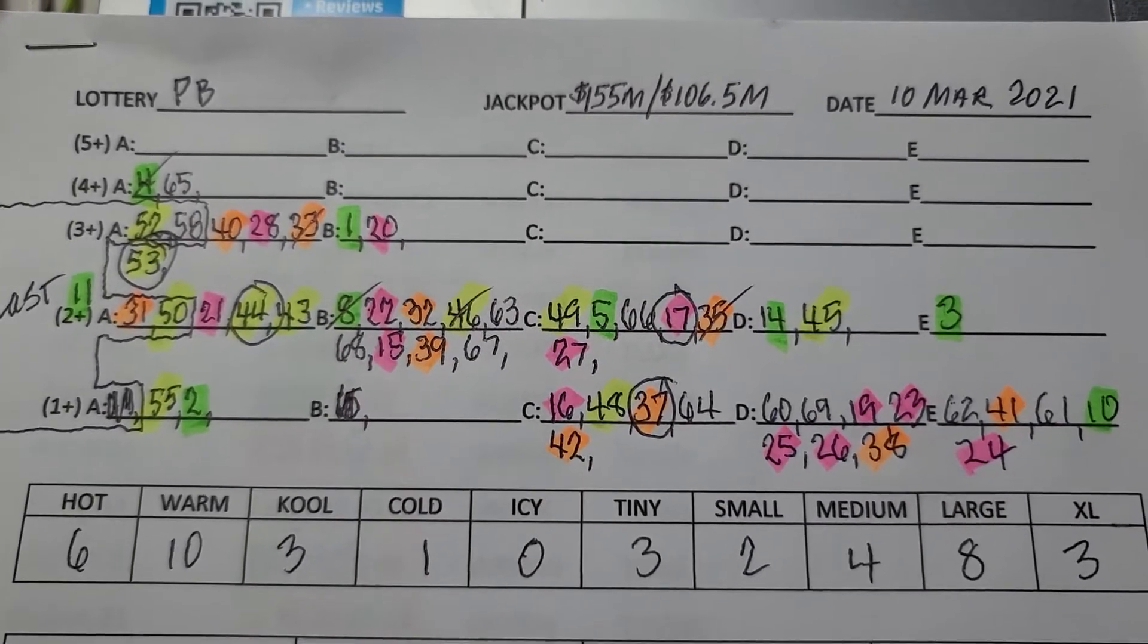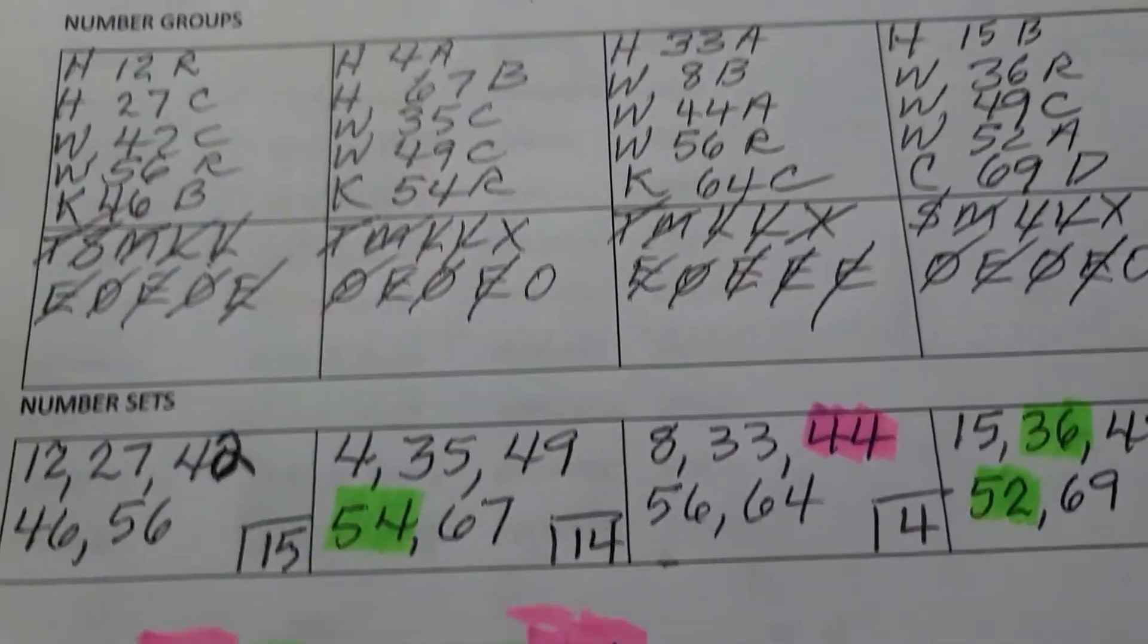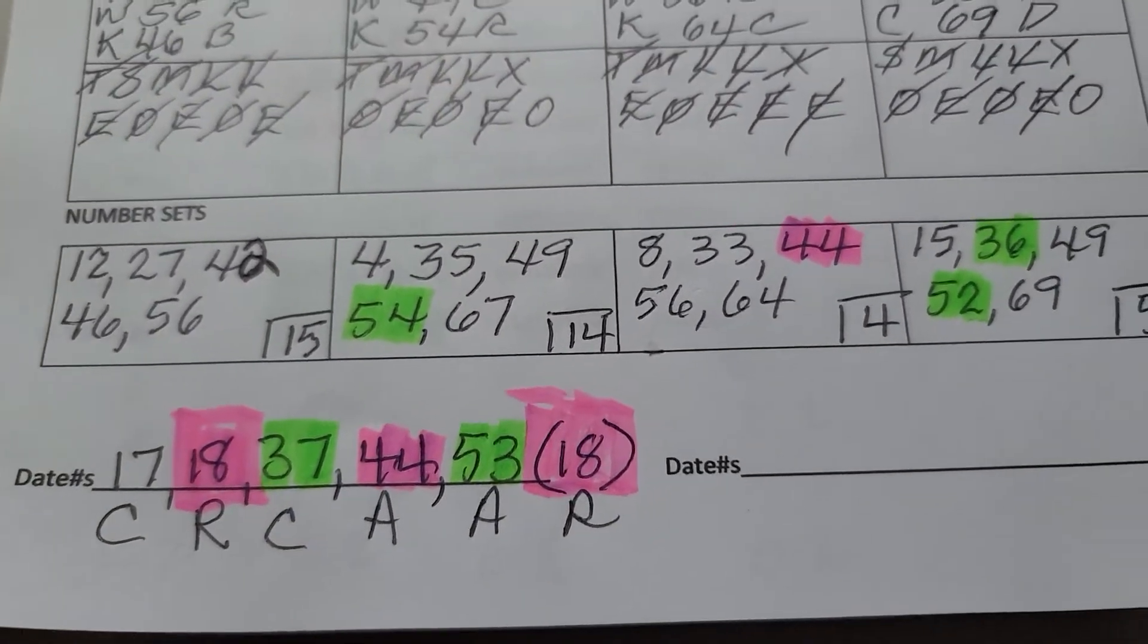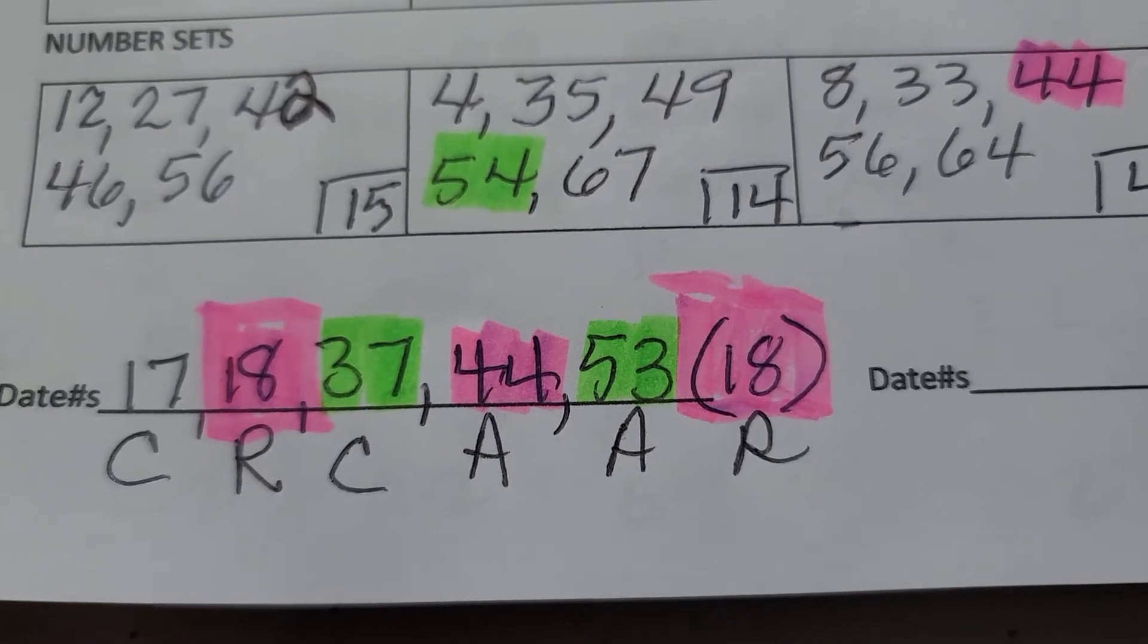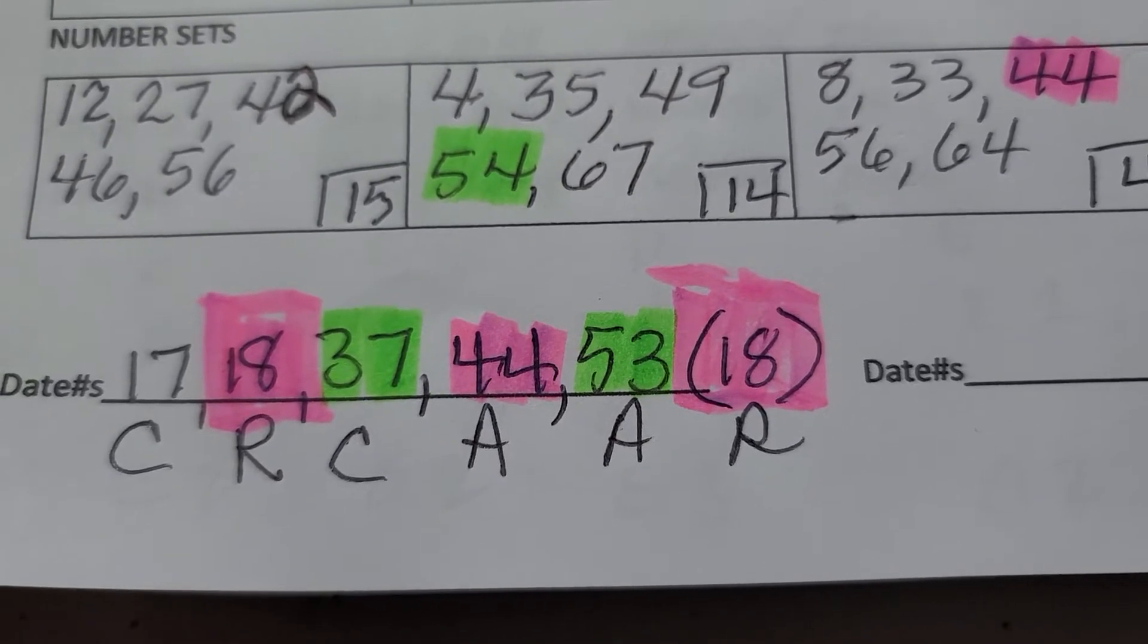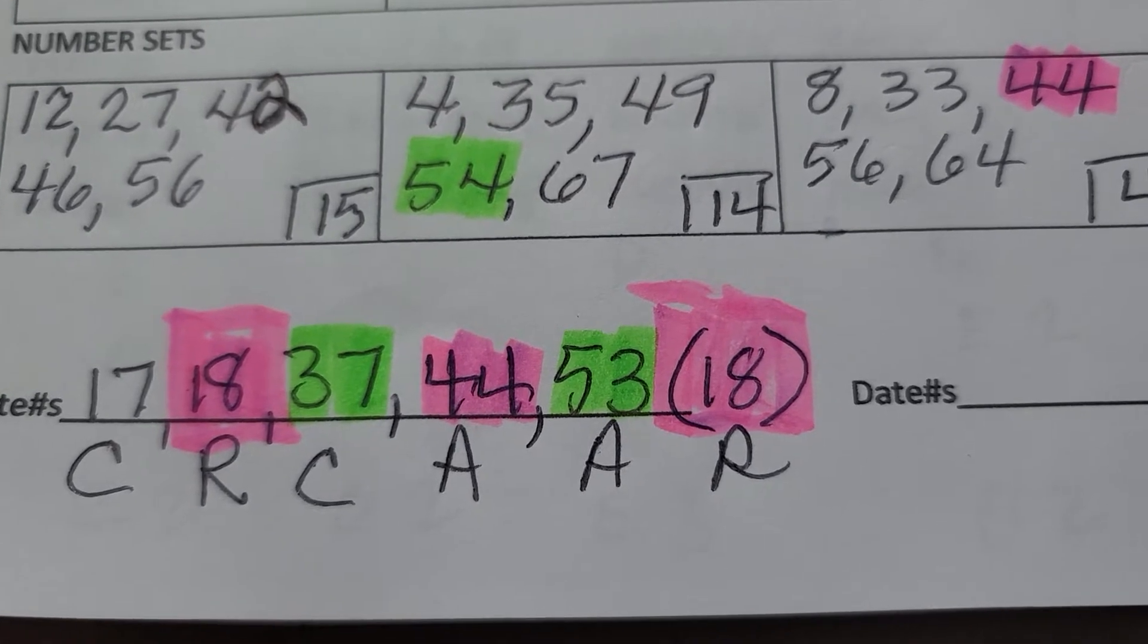Okay, so this is Powerball for today and here's the numbers that were drawn. The numbers drawn were 8, 17, 18, 50, 37, 44, 53, and 18.